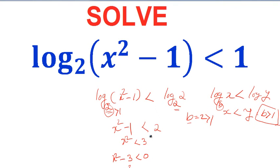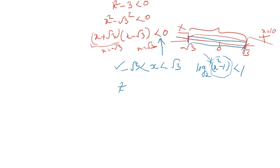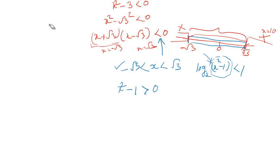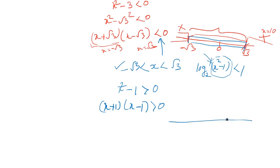We write x² - 1 > 0. This factors as (x + 1)(x - 1) > 0, since x² - 1 = x² - a² = (x + a)(x - a). The critical points here are +1 and -1, giving three domains: x < -1, -1 < x < 1, and x > 1.